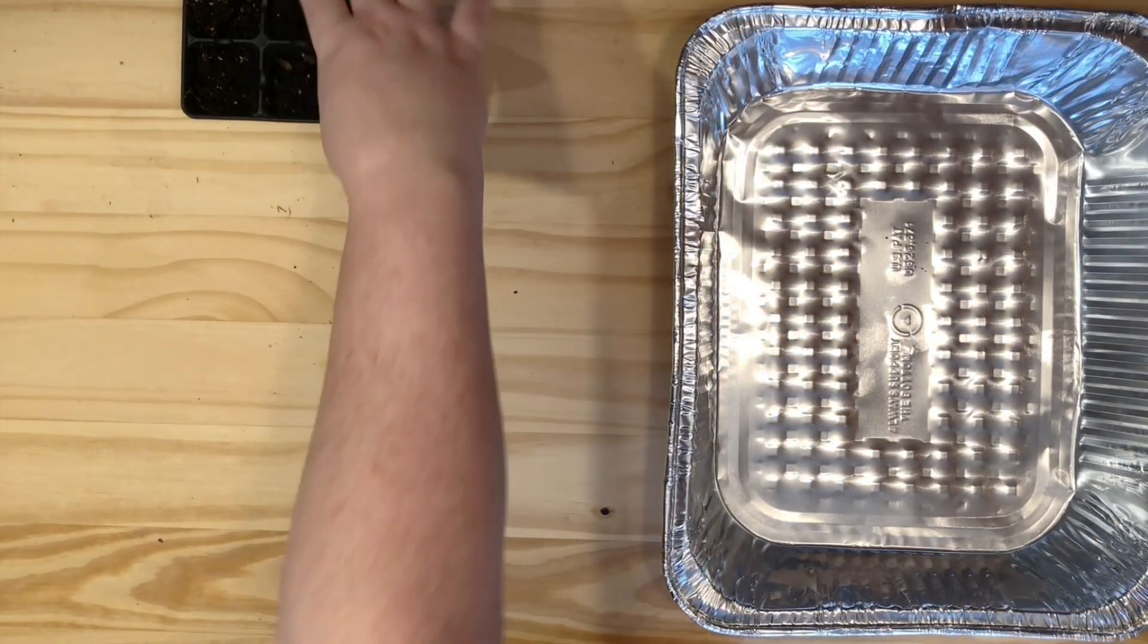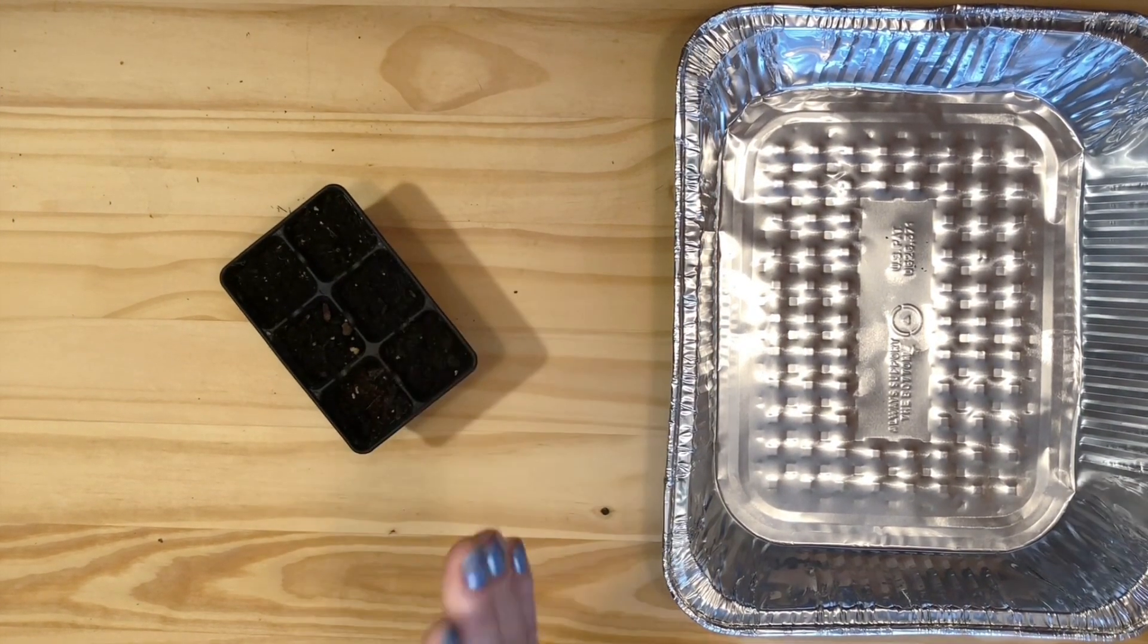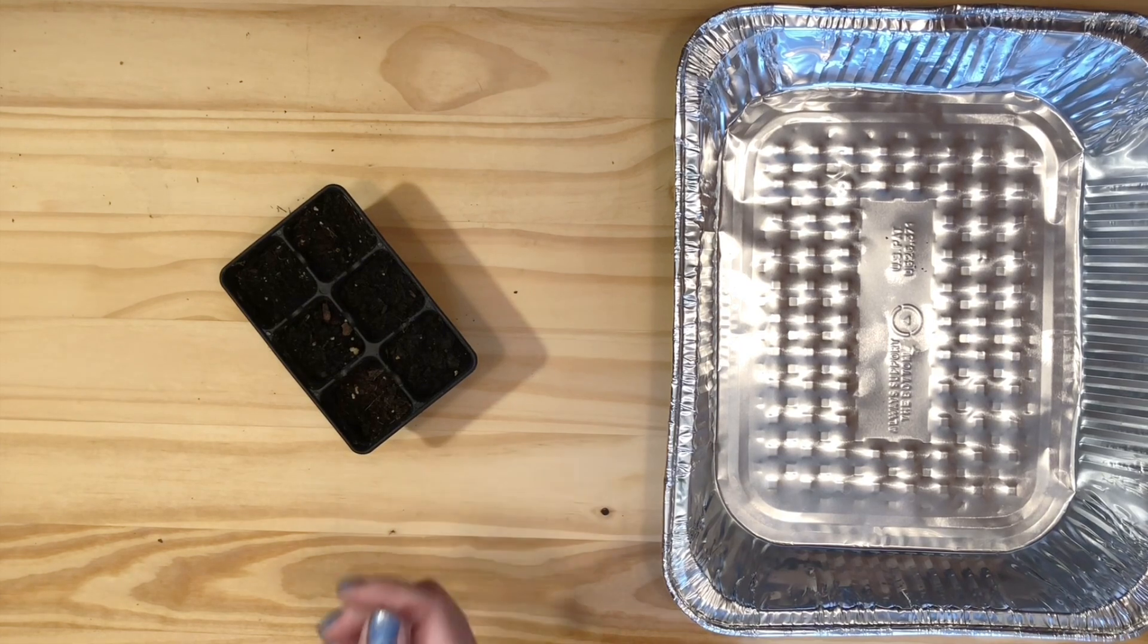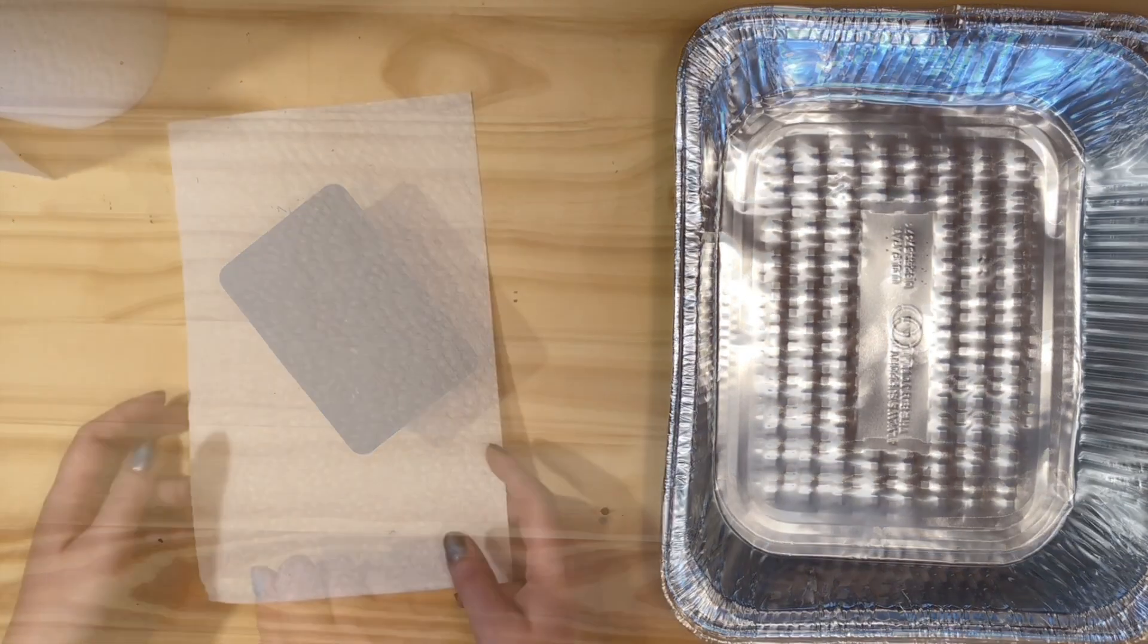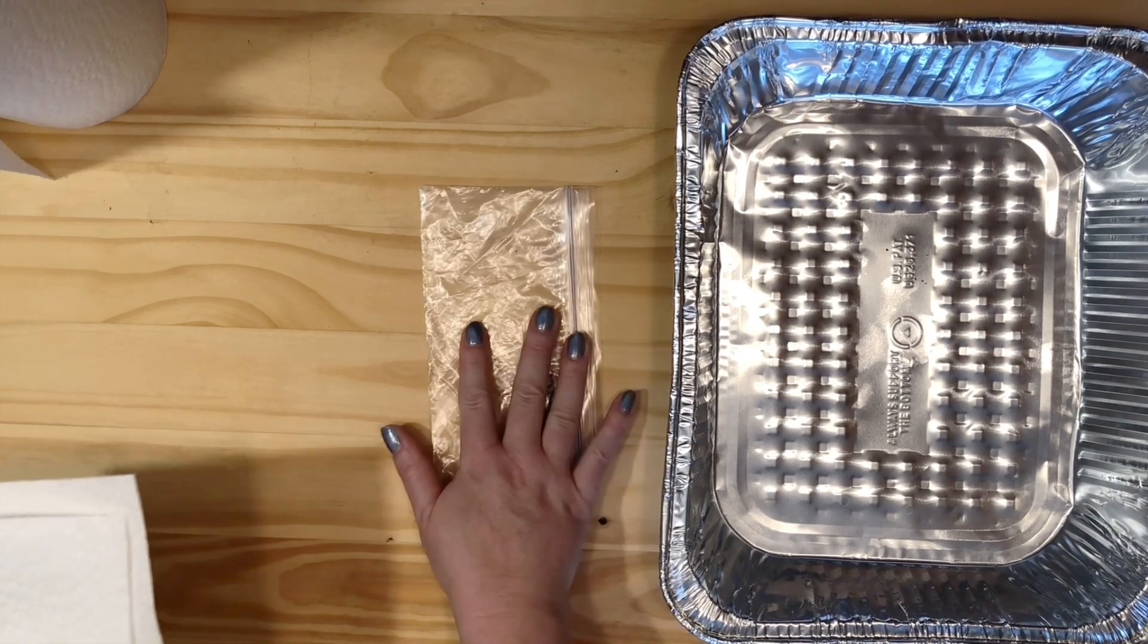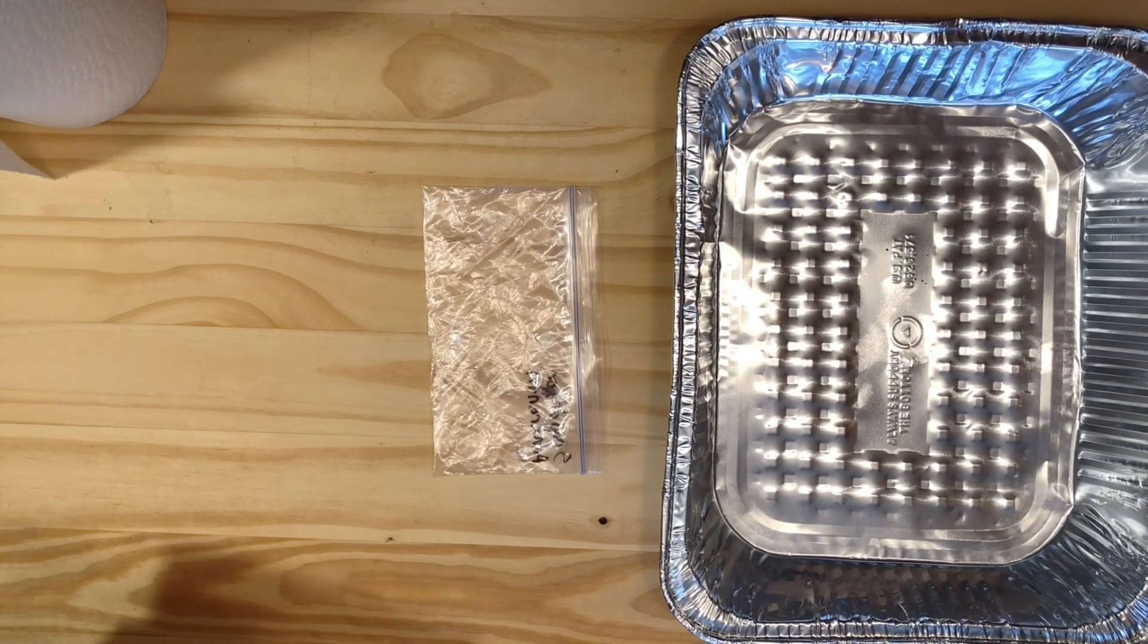To do your germination testing with soil, you pretty much start your seeds like you normally would in your seed starting trays and count. The paper towel method involves sprouting your seeds on a paper towel.